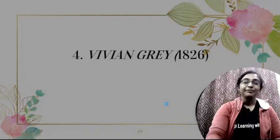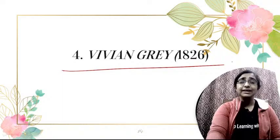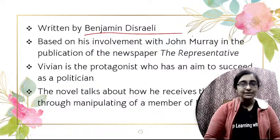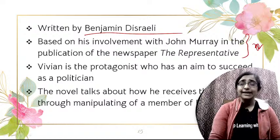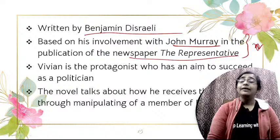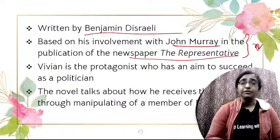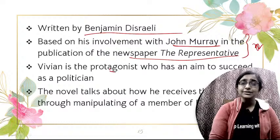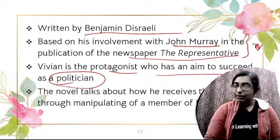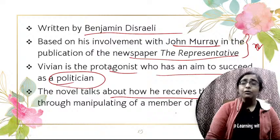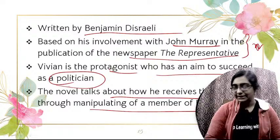Next is Vivian Grey, published in 1826, the debut novel of Benjamin Disraeli. Vivian is the name of the protagonist, who has an aim to succeed as a politician. The novel talks about how he receives that power through manipulating a member of parliament.